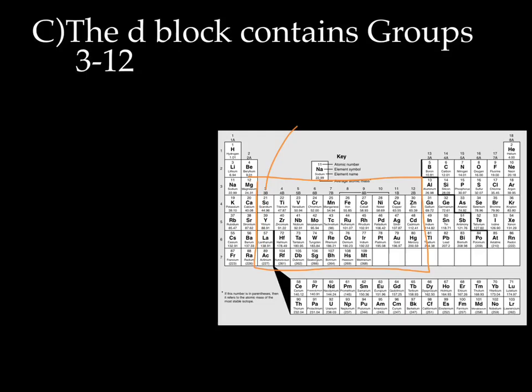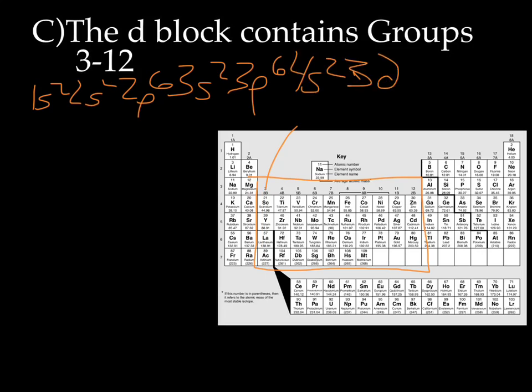So if we take, for example, scandium, we're going to have 1s2, 2s2, 2p6, 3s2, 3p6, 4s2, 3d1. The valence in this case is going to be 4s, but the last thing we write is 3d.